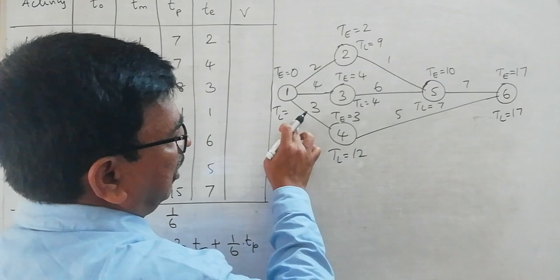Now we identify the critical path by checking nodes where TE = TL. These are nodes 1, 3, 5, and 6. Confirming: TE = TL = 0 at node 1, 4 at node 3, 10 at node 5, and 17 at node 6. So the critical path is 1→3→5→6 and the expected project duration is 17 weeks.